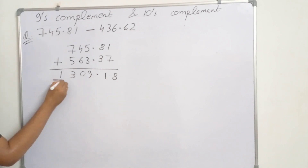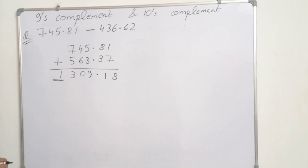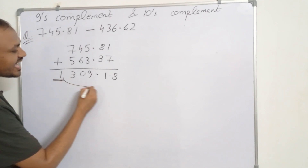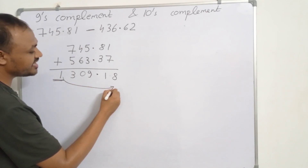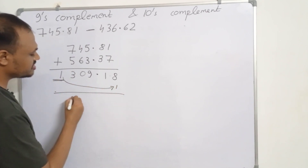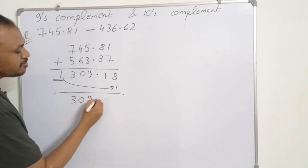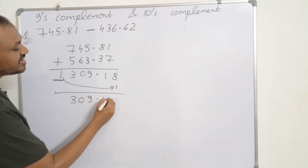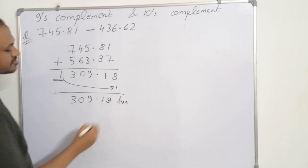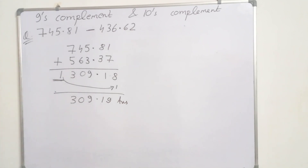This 1 is the carry. If there is a carry, it means that the result is positive, and we have to add this carry to the last digit. So we will get 309.19. This is the answer.